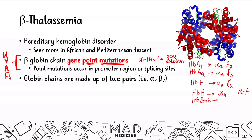Hemoglobin Barts occurs during the fetal stage and it's going to be caused by four alpha chain gene deletions. It's going to present with gamma 4 because this is a fetal type of disorder, and it's going to lead to hydrops fetalis. In beta thalassemia, you're not going to have proper production of the beta chain, and mainly this is going to affect hemoglobin A1.